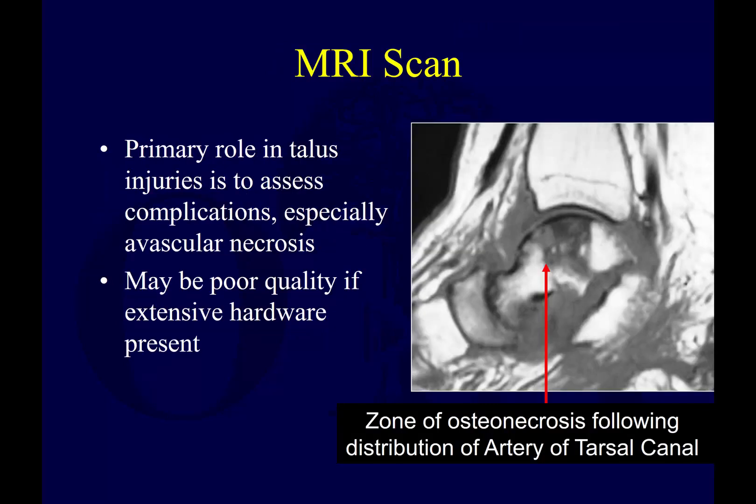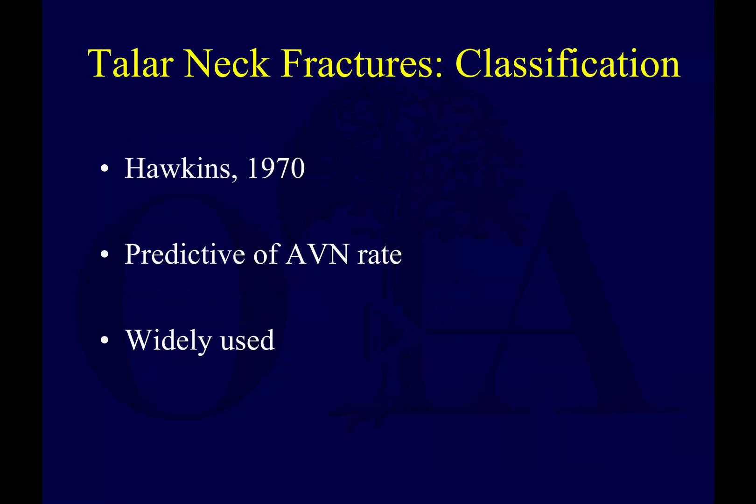MRI is not typically used as part of routine immediate acute imaging, but it can be helpful to demonstrate osteonecrosis. The problem is that these fractures often involve surgery, and implants can make it difficult to assess on MRI.